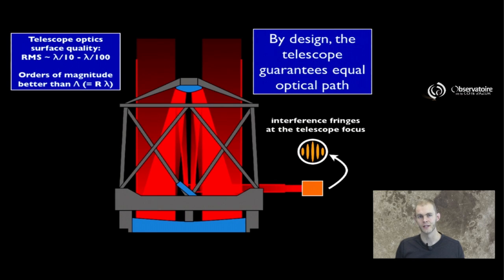If you compare that to the requirement we've set in order to be able to witness interferences, the constraint that was imposed by the coherence length, you realize that the optical quality of most telescopes is orders of magnitude better than this coherence length requirement that we've set earlier. And so it is no surprise that early-day astronomers were able to produce interference fringes by simply using a telescope, an aperture mask.